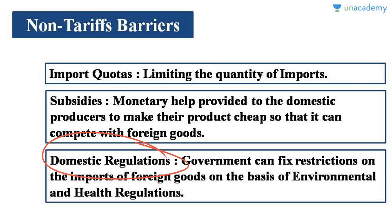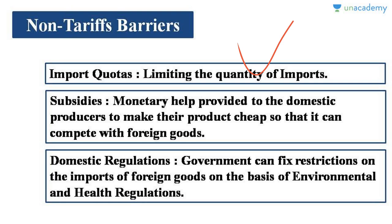These are all non-tariff barriers. Government takes help of both tariff and non-tariff barriers to reduce or discourage international trade. So we have seen two theories of international trade — one supports international trade (economic liberalism), and the other discourages it (mercantilism).